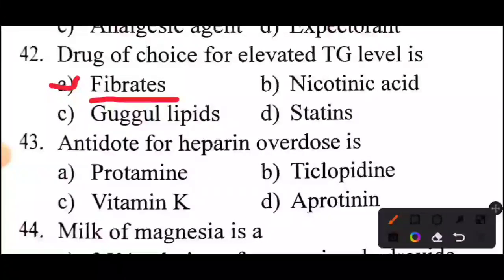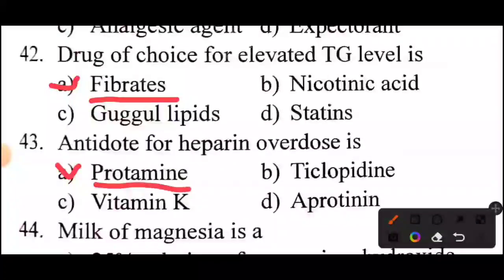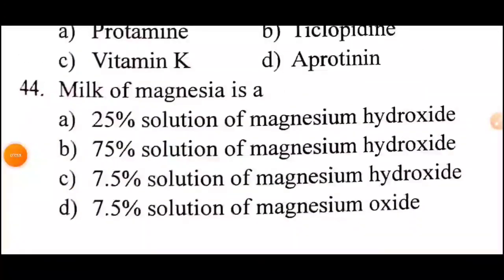Question 53 of 60: What is the antidote for Heparin overdose? Answer is Option A: Protamine.